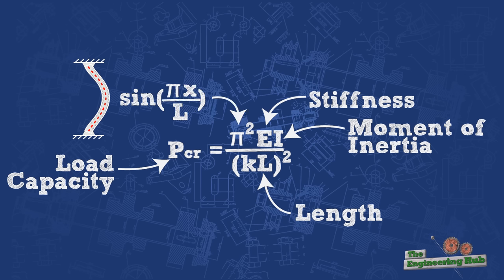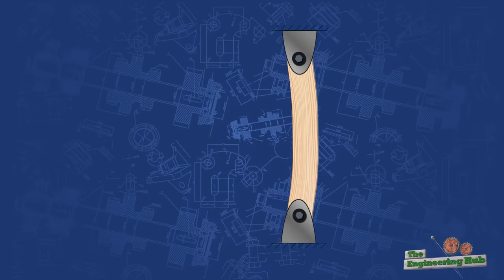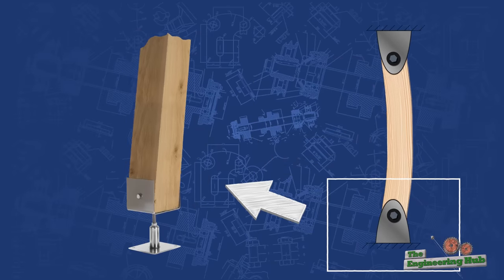The last remaining factor is related to the end conditions of the column, which we will assume to be pin-connected. This means that the column is held in place, but is allowed to rotate about its ends, which makes the column more susceptible to bending.